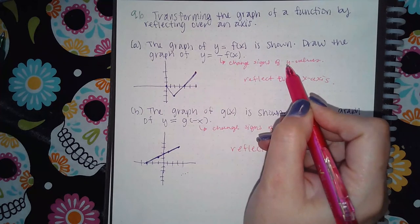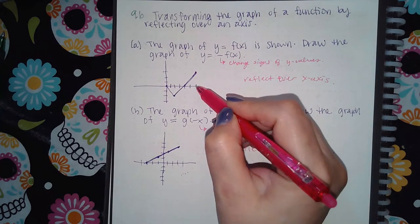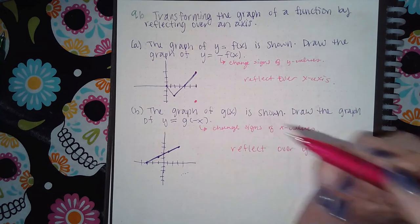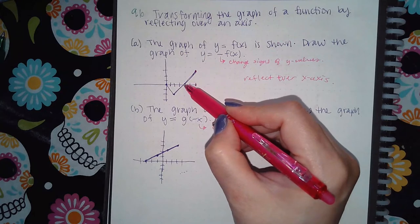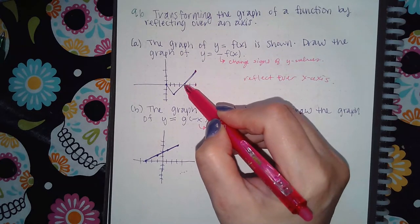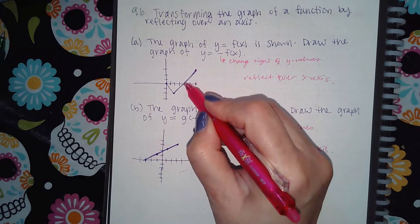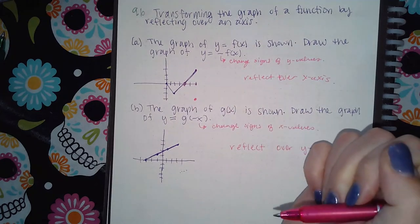But the y values are going to change signs. So now it's going to be 6 and negative 3, and I'm going to put that point there. Here I have 4 and 0, and when you change the y value of 0, it doesn't change actually, it's still just 0. So that point doesn't move at all.